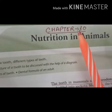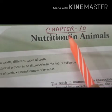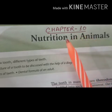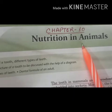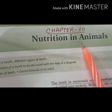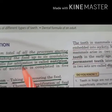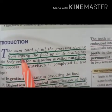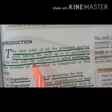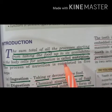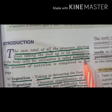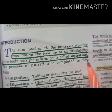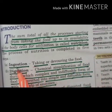Hello class 9th, let's start a new chapter — Chapter 10 in biology: Nutrition in Animals. In the previous video we discussed different types of nutrients and their utilization in our body. Now, what is nutrition? Nutrition is the sum total of all the processes starting from taking the food up to its availability to the body cells for utilization.